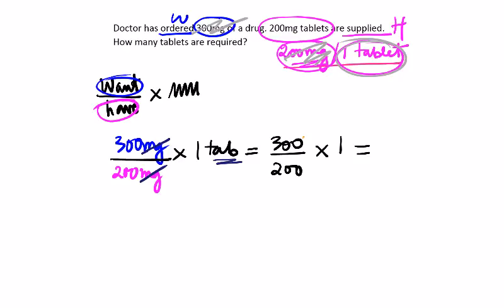Simplify - we can cross a 0 on top, a 0 on bottom, and we end up with 30 over 20 times 1. Oh, we could simplify actually, couldn't we?